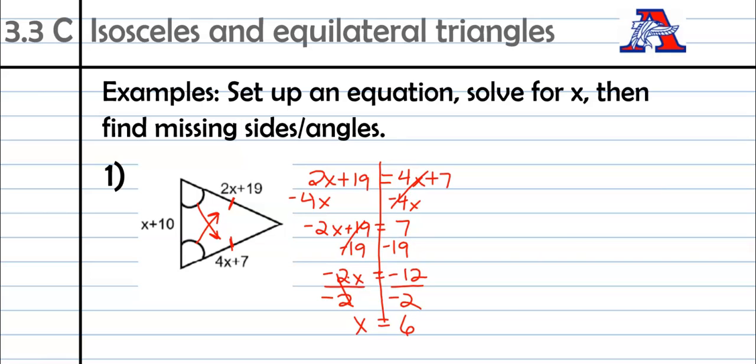Not angles this time. We're not given enough information, but we can find the missing sides. So we're going to take that 6 and we're going to substitute it in three different places. Here, here, and also over here. So first spot, 2 times X. So 2 times 6 plus 19, I'm going to do that all in one step. 2 times 6 is 12. 12 plus 19 is going to be 31.